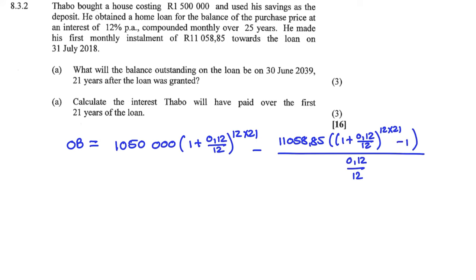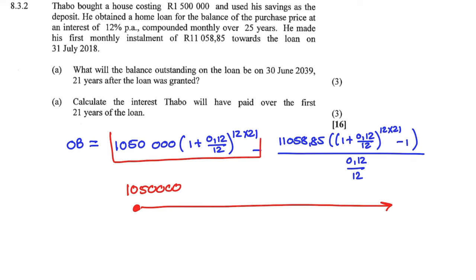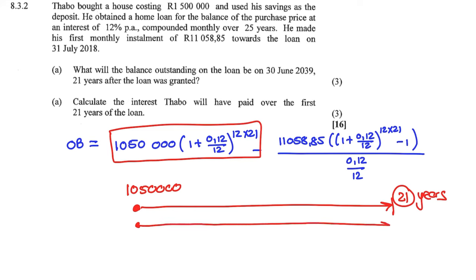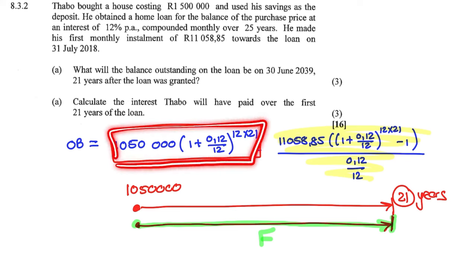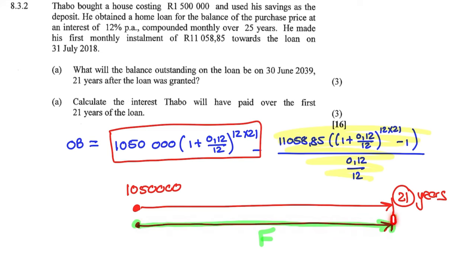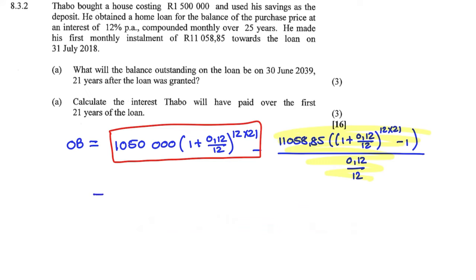Basically what I'm doing is taking the loan of 1,050,000 Rand forward by how much interest I was charged — this is the first section. But also I'm seeing how much I have paid on this loan over 21 years, so that's the second part of the equation, going forward to see the impact of payments made from the start. The difference between how much the loan has grown and the impact of my future payments is my outstanding balance. If I put this into my calculator carefully, my outstanding balance is 419,952 Rand and 39 cents.